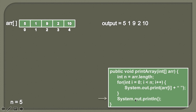At the last, we'll simply do a println, which will bring the cursor to the next line on the console. So this was a demonstration of how we can print the elements of an array in Java. We iterated each and every element using a for loop from the start index to the end index, and printed the contents of the array on the console. Now let's go to Eclipse and see the demonstration of this code.